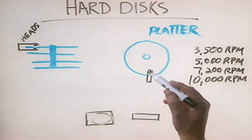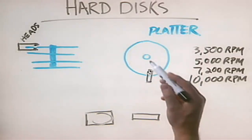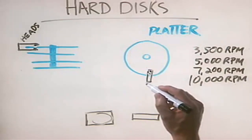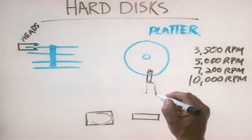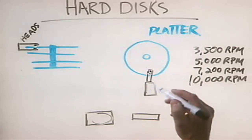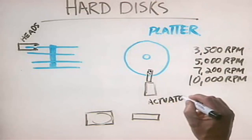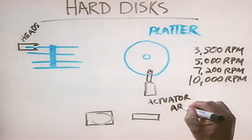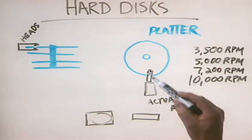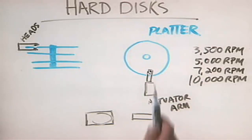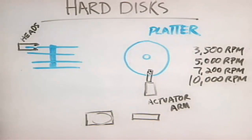In order to move the head around on the platter to read data from different points on the disk, we have what's called an actuator arm. Its job is to move that head across the platter — a lot like the arm on a record player — so it can read data from any given point on the surface.